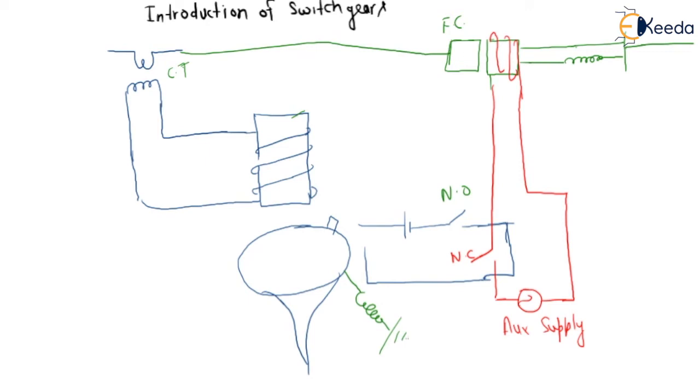What happens in normal condition? Normal condition means let us assume this is 100 by 5 ampere. In the primary side it is 100 ampere current flowing and this is 5 ampere current flowing.